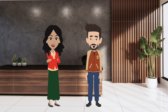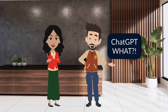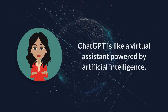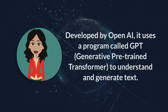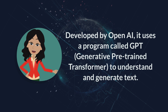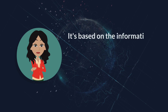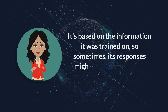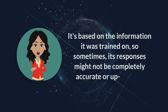Now, you might be wondering, what is ChatGPT? ChatGPT is like a virtual assistant powered by artificial intelligence. Developed by OpenAI, it uses a program called GPT, Generative Pre-Trained Transformer, to understand and generate text. But remember, it's not perfect. It's based on the information it was trained on, so sometimes its responses might not be completely accurate or up-to-date.